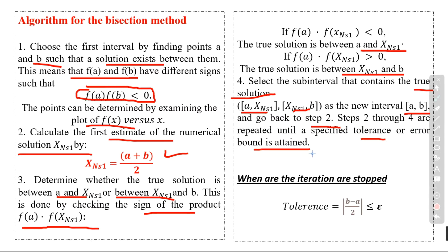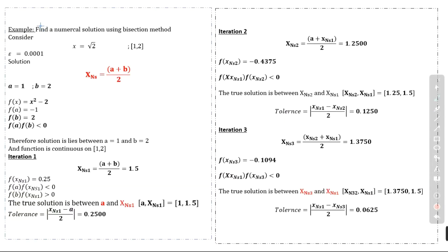Steps two through four are repeated until a specified tolerance or error bound is attained. When the iterations are stopped, the tolerance condition is: |b - a| / 2 ≤ given tolerance.